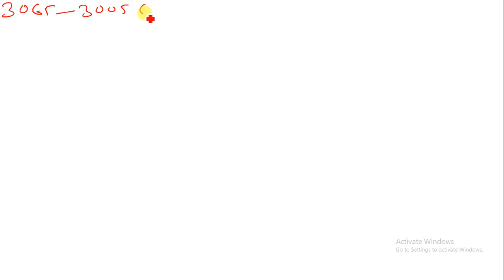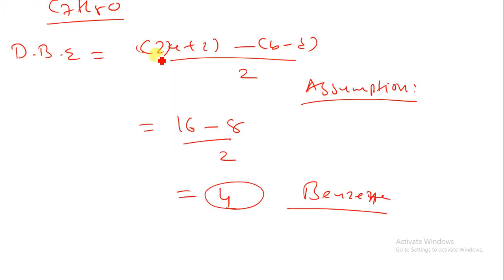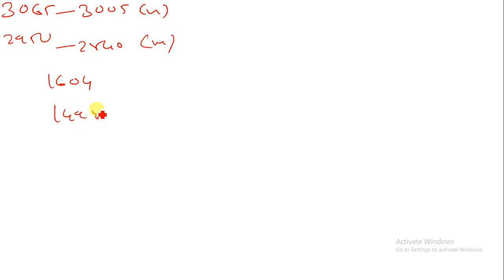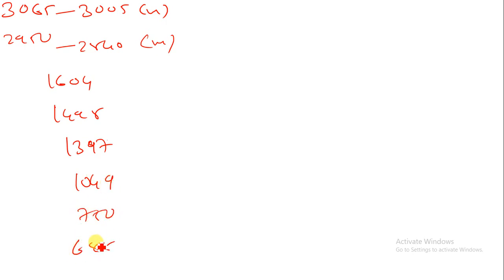The IR spectra given: 3065–3005 cm⁻¹ medium peak (aromatic stretching), 2950–2840 cm⁻¹ medium peak (alkane CH3 stretching), then 1604, 1498, 1397 cm⁻¹ (C=C aromatic bending), 1049 cm⁻¹ (ether linkage, C–O), and 750–688 cm⁻¹ (monosubstituent or meta substituent).